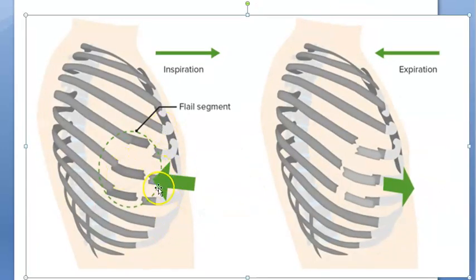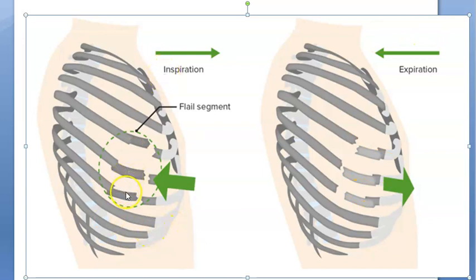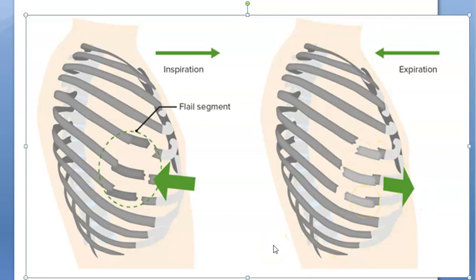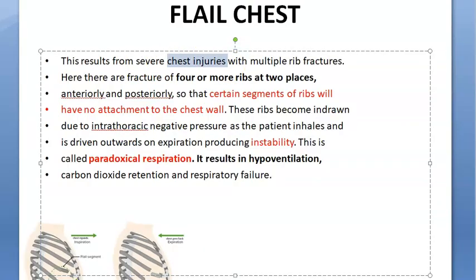The ribs are broken and there are floating pieces. When the person is inspiring, the whole chest expands but these floating pieces remain behind. When he's breathing out, the chest moves in and these pieces pop out. This is called paradoxical breathing, and it is because of severe chest injury — multiple rib fractures, four or more ribs broken at two places.